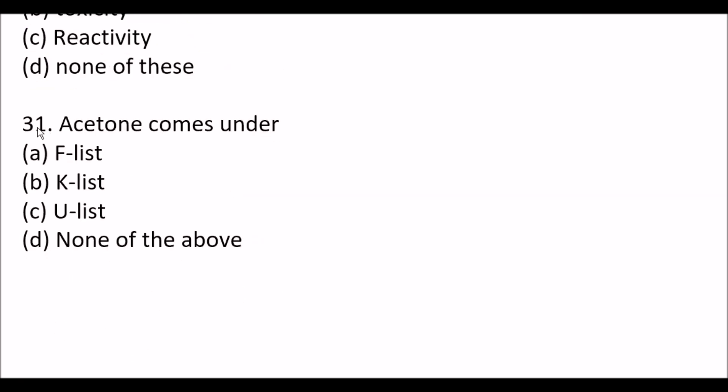Next question: Acetone comes under - Option A - F list, Option B - K list, Option C - U list, Option D - none of the above. The right answer is Option C - U list.